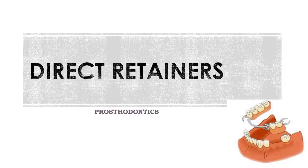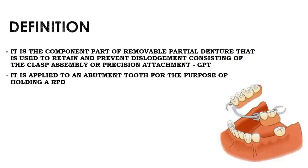What is a direct retainer? It is applied to the abutment teeth for the purpose of holding a removable partial denture. According to the glossary of prosthodontics, it is the component part of the removable partial denture used to retain and prevent dislodgement, consisting of the clasp assembly or precision attachment.